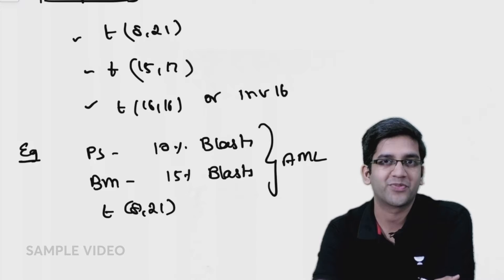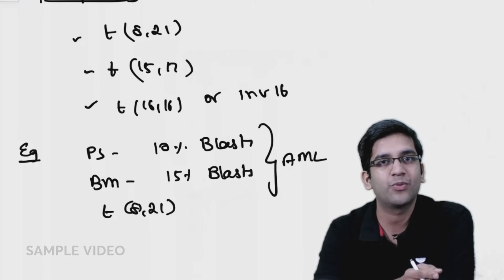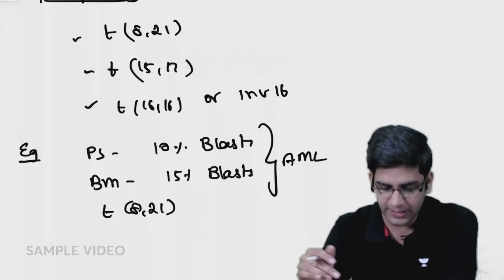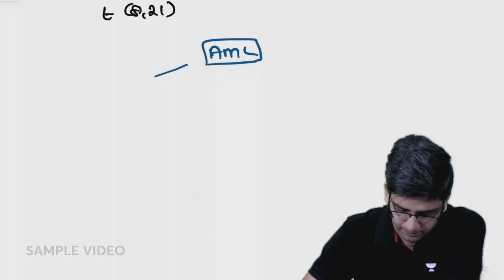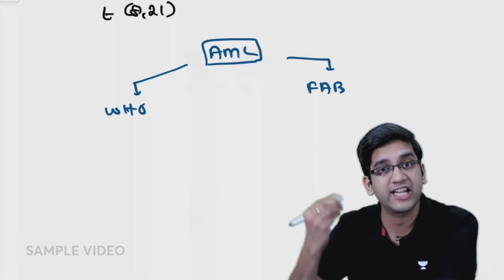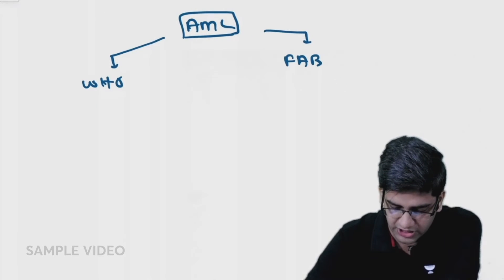Now classification. What we saw in ALL was L1, L2, L3 classification and B and T ALL classification. Here again, I'm going to divide AML classification into two major groups: WHO and FAB, the older FAB.